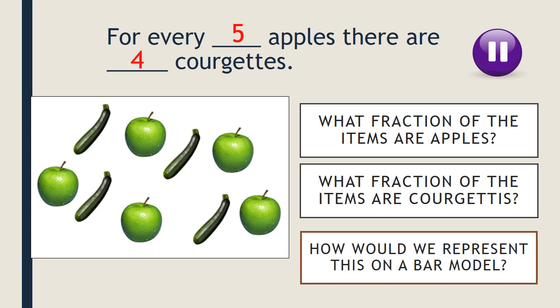For every five apples there are four courgettes — some countries call it a zucchini but we'll stick with courgettes. What fraction of the items are apples? When we're talking about fractions, the total becomes our denominator and what we're referring to is our numerator. So our fraction would be five ninths, because there are five out of nine. I've also written that sentence as a ratio: five to four, because five apples are mentioned first and four courgettes second. Five plus four gives us our total of nine.